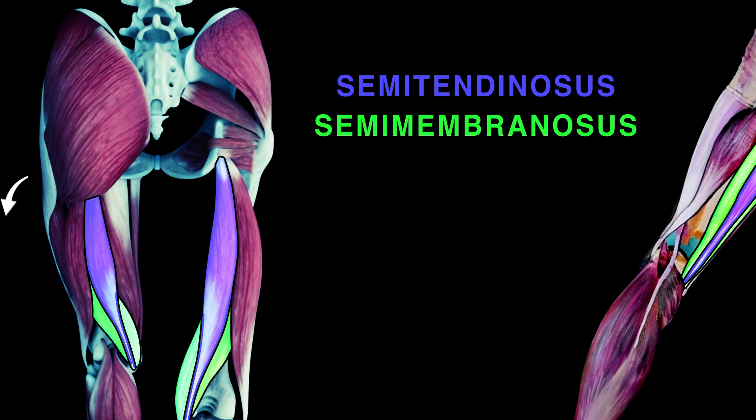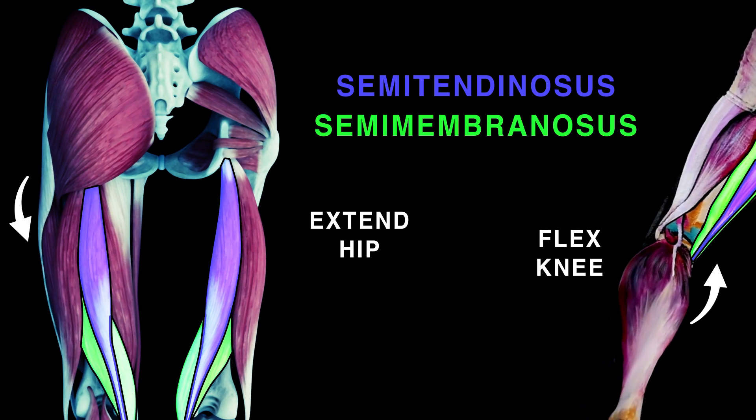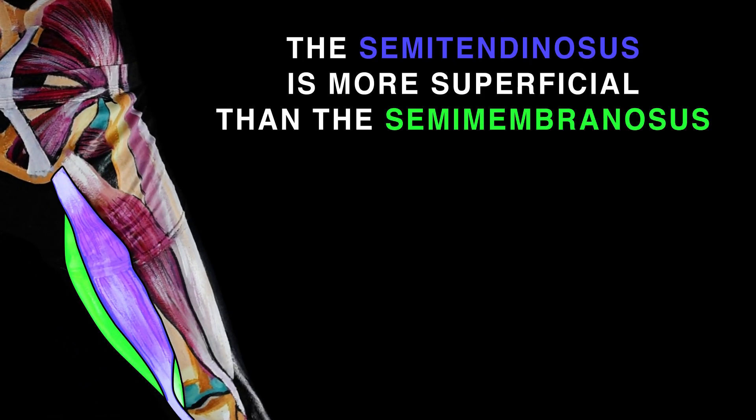Semitendinosus and semimembranosus extend the hip and flex the knee, and the semitendinosus is overtop as you can see.